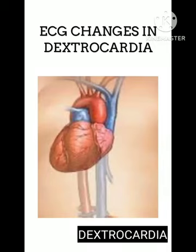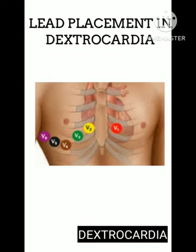Normally the heart points towards the left side of the chest, but in dextrocardia the heart points towards the right side of the chest. So recording of ECG cannot be done in the usual way. We will see lead placement in dextrocardia.